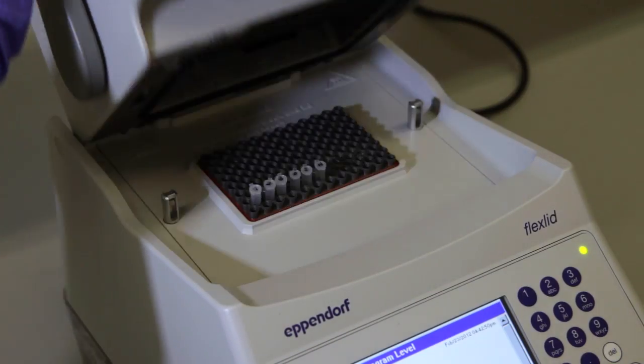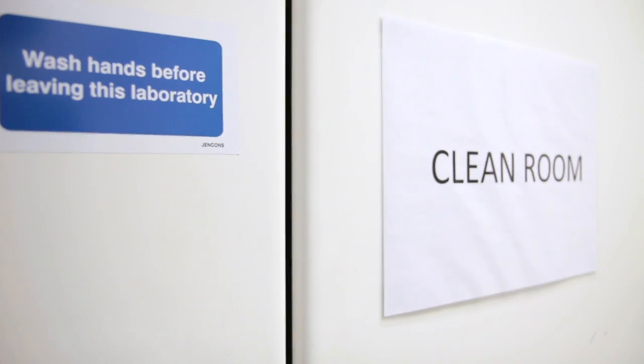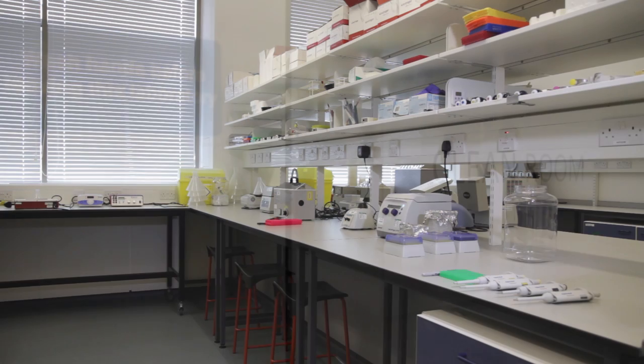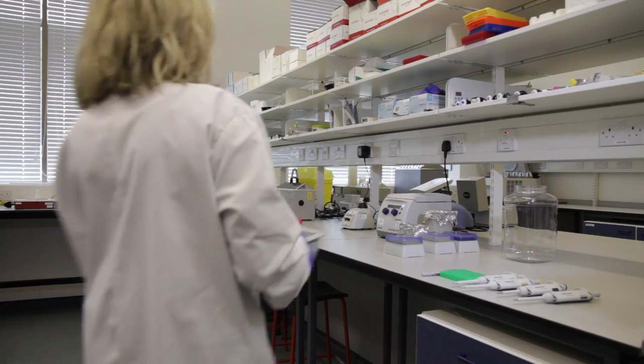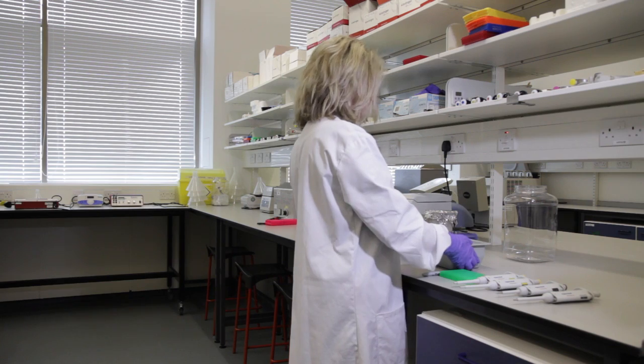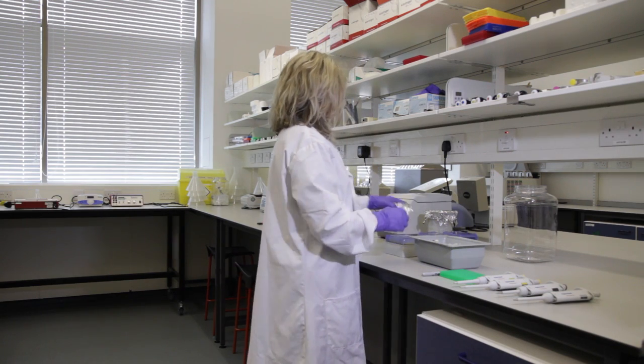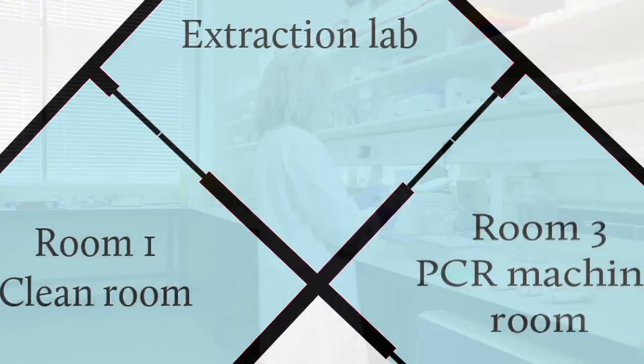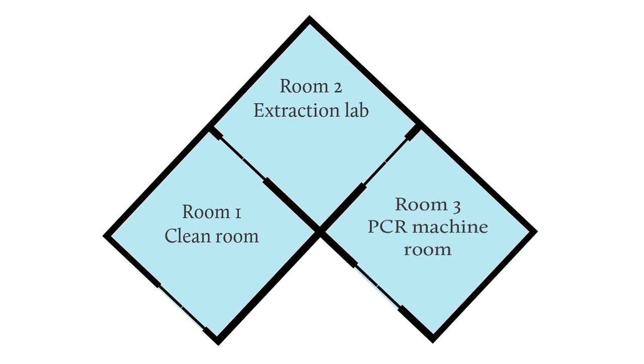The lab area used to set up and run your reactions needs to be carefully controlled and maintained. PCR can detect a single molecule of DNA, so it is essential to have a unidirectional workflow with, ideally, three separate rooms in your system.